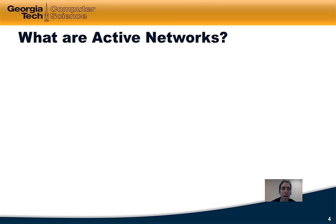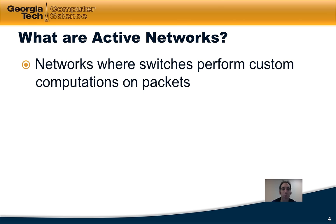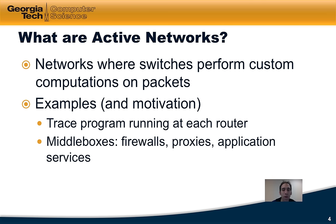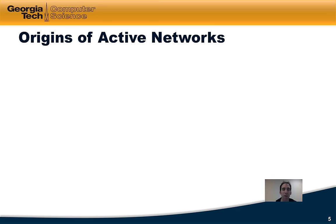What are active networks? Simply put, active networks are networks where the switches perform custom computations on packets as the packets travel through those switches. For example, a router might perform some kind of tracing or program on packets as they travel through. Middleboxes are also an example — boxes in the network that perform firewalling, proxying, application services, and so forth are all custom computations on traffic performed in the network. We can think of middleboxes as a modern-day form of active networks.